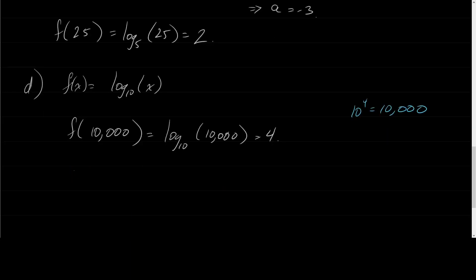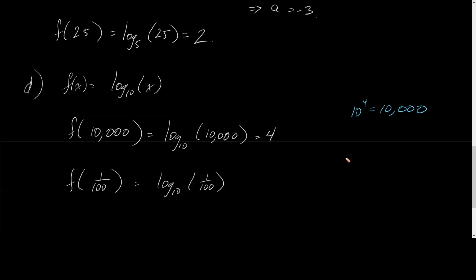Similarly, what is f of 1 over 100? That's log base 10 of 1 over 100. To what power do I need to raise 10 to get 1 over 100? Well, 1 over 100 is 1 over 10 squared, which is 10 to the negative 2. So the answer is negative 2.